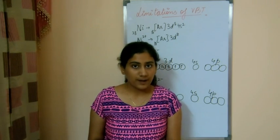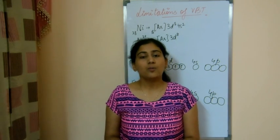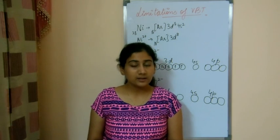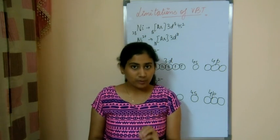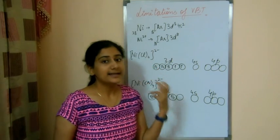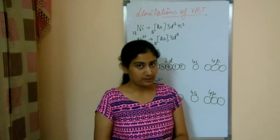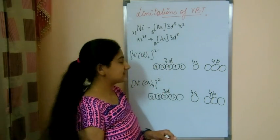And the main drawback of valence bond theory was it could not predict whether the compound with ligand 4 is going to be tetrahedral or square planar. I can explain it with an example.